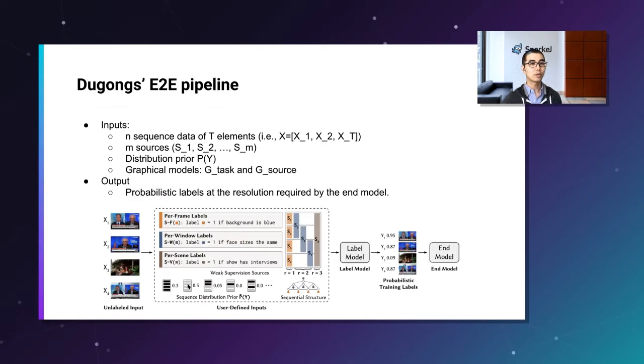One is it integrates multi-resolution supervision sources of varying quality, that is, multi-task at different resolutions. Multi-task means different resolutions per frame or per window, per sequence. It has different task labels, like Y1 for frame one, or Y sequence for the entire sequence. And also, probabilistic graphical models have layers at each resolution. In the previous slide, we had just one single layer, but we have multiple layers for different resolutions. One graphical model for tasks, and another graphical model for sources. And the second feature is that it incorporates distribution prior to generate high-quality training labels for sequential data. So that's Dugong, and this is the end-to-end pipeline for Dugong. We have this input, N sequence data of T elements. Again, this T is four in this example. And M number of sources. We have to provide distribution prior and also graphical models for tasks and sources.